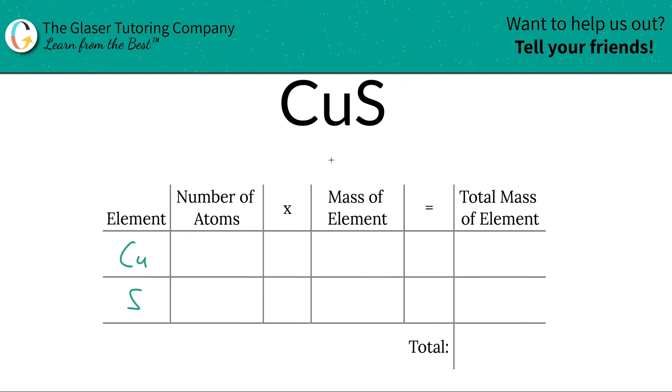Next, write down the number of atoms. That's where the subscripts come into play. If you don't see a subscript, there's a one down there. So there's one atom of copper, same thing for sulfur.